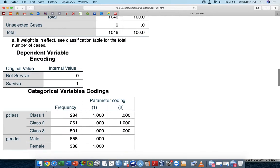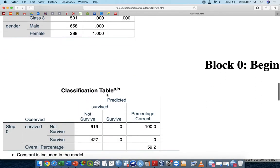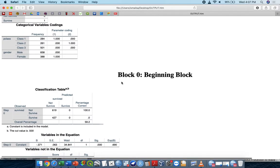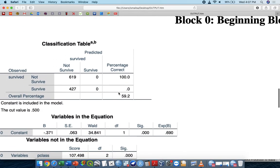So how to read your logistic regression? First of all, you go to the block number one. This is called the beginning block. The beginning block, the most important thing is actually the classification tables. You must make sure that the classification tables give you the satisfactory percentage of correct. But this one is block zero.